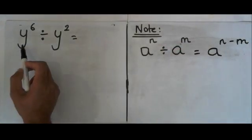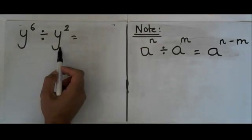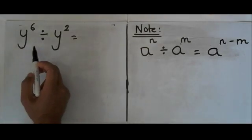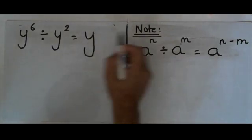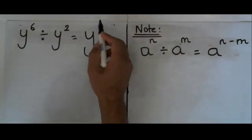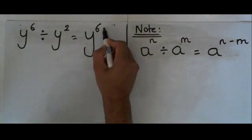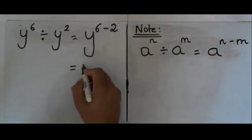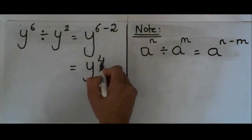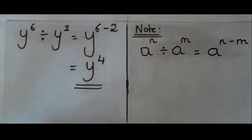So here we can see that y, I've got y here and I've got y there, and they have the same base. So all I need to do is write y just once, then I'm going to take away the powers of 6 take away 2. And 6 take away 2 is equal to 4. So my answer is y to the power of 4.